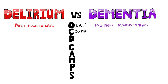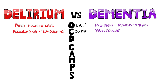C is for the course. Delirium is often fluctuating, meaning the patient may be quite settled at some points and more agitated in others. Typically, there's the sundowning phenomenon, where patients with delirium become more agitated towards the evening. In hypoactive delirium, this is harder to appreciate, however. Dementia, on the other hand, gets progressively worse.